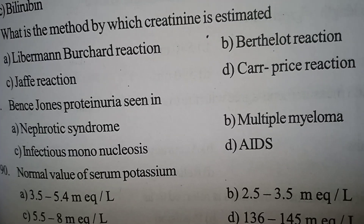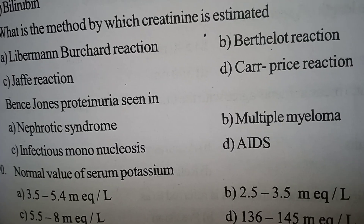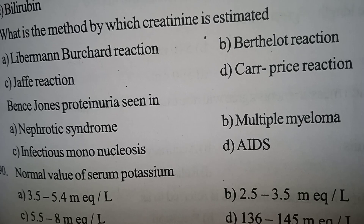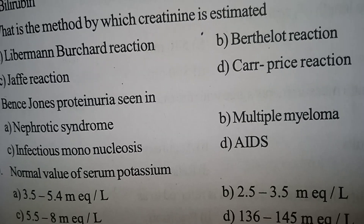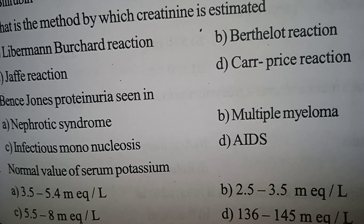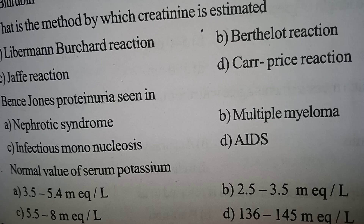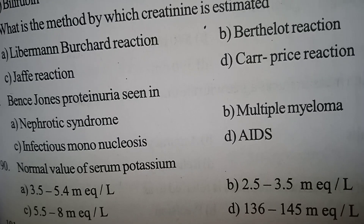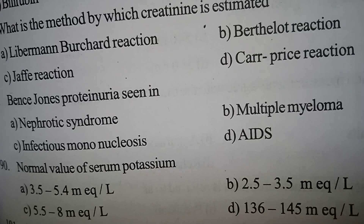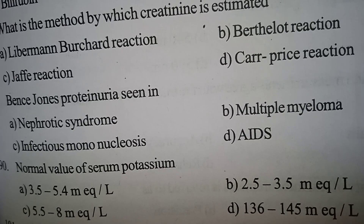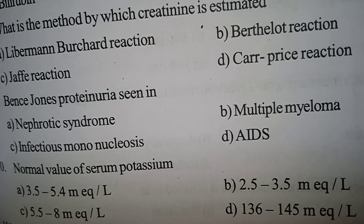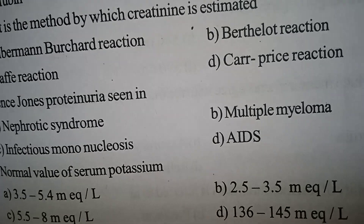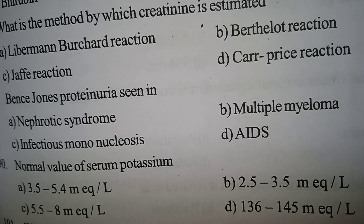Next question. Normal value of serum potassium: Option A: 3.5 to 5.4 milliequivalents per litre. Option B: 2.5 to 3.5 milliequivalents per litre. Option C: 5.5 to 8 milliequivalents per litre. Option D: 136 to 145 milliequivalents per litre.